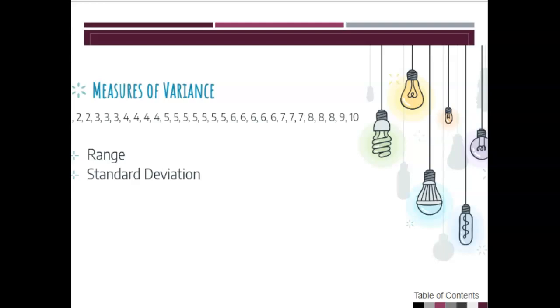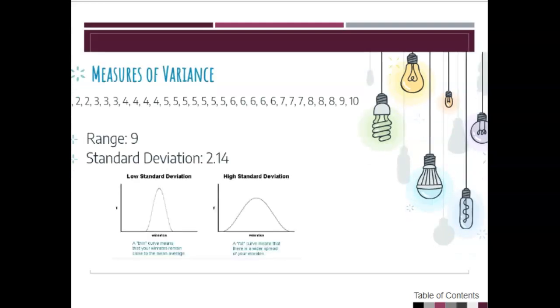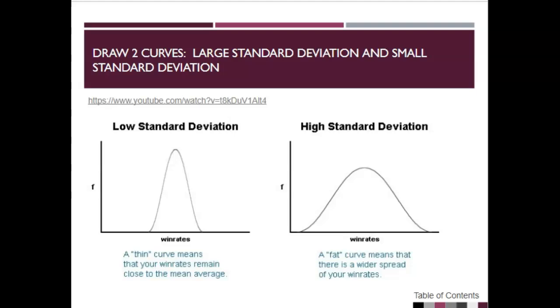A little bit more here about measures of variance. In addition to standard deviation, range helps us to see how much our data varies. Range is calculated by looking at the difference from the lowest to the highest point of data. In this case, with these numbers, with 10 being the highest and one being the lowest, our range would be nine. The standard deviation would be 2.14. You don't actually have to calculate that, but you do need to know what it means. 2.14 would be considered a pretty low standard deviation in this case. So it would be represented by a thin normal curve, whereas a higher standard deviation would be represented by a wider normal curve. The thin curve means that your scores are closer to the average, and the wider curve means that your scores are farther from the average.